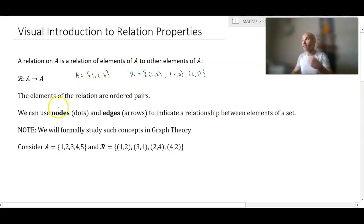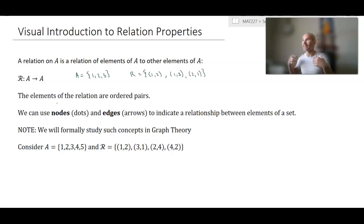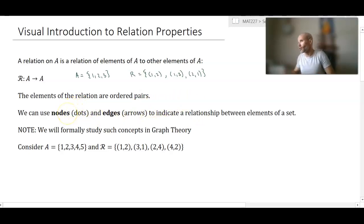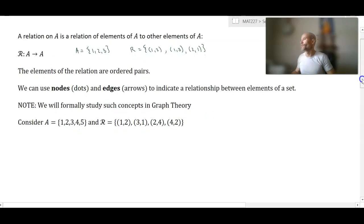We can use a visual technique to show how elements are related to one another and study properties that certain relations have. Being a function requires certain properties to hold, but here we're going to look at three different properties beyond those required for a function to be a function. We'll focus on visualizing these relationships using what are called nodes and edges — dots and arrows — to indicate a relationship between elements of a set. We'll study this more formally in graph theory, but we'll introduce the visualization now because it's extremely helpful.